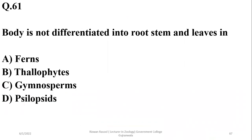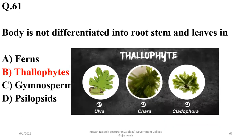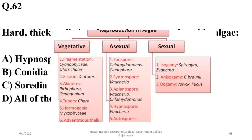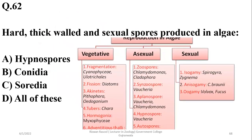Number 61. Body is not differentiated into root, stem, and leaves in thallophytes — plants having a thallus body. Number 62. Hard thick-walled asexual spores produced in algae are termed hypnospores. So alpha is the right option. There are different types of spores: vegetative, asexual, or sexual reproduction. Asexual spores could be zoospores, synzoospores, aplanospores, and hypnospores. Right option alpha.